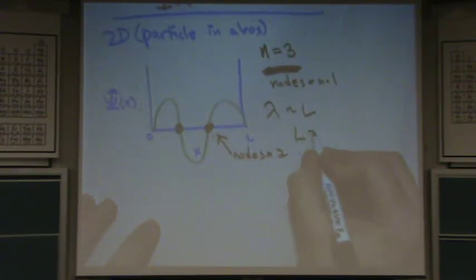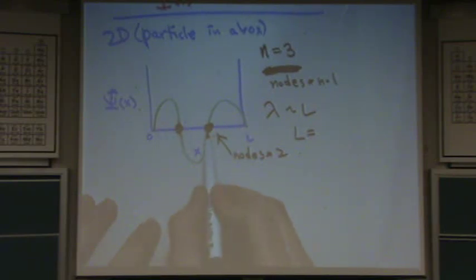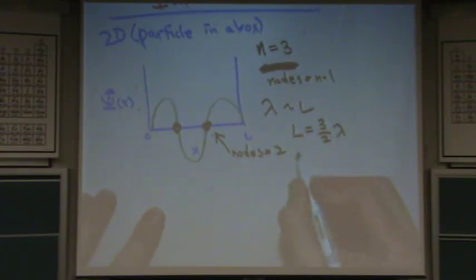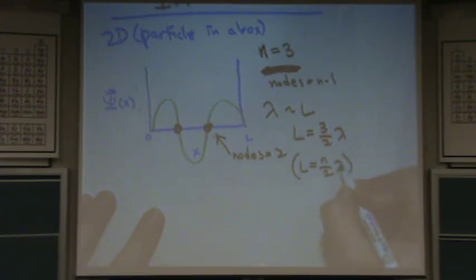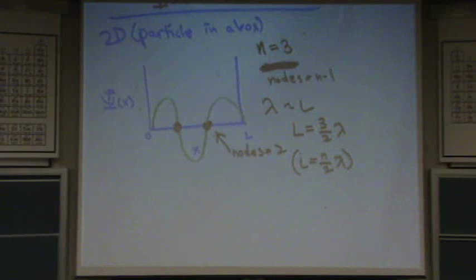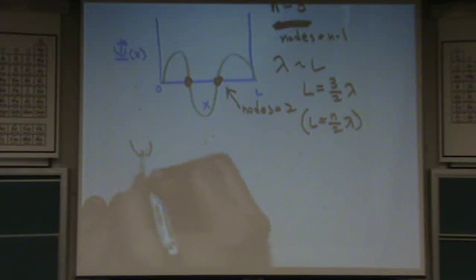Well, in this case, L equals a wavelength and a half. This has one wavelength and a half. So, it's three halves lambda. Or the general equation is L equals n over two lambda. Whether your instructor gives you that or not, I have no idea. The other thing, this will probably be given.